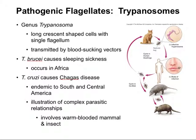The trypanosomes are pathogenic flagellates, and it's interesting to look at the Trypanosoma genus. These are long crescent-shaped cells that have a single flagellum, and they're transmitted by blood-sucking vectors. A vector is simply a vehicle for transport. For example, with malaria, the mosquito is a vector that infects people — we'll look at that one later in the semester.